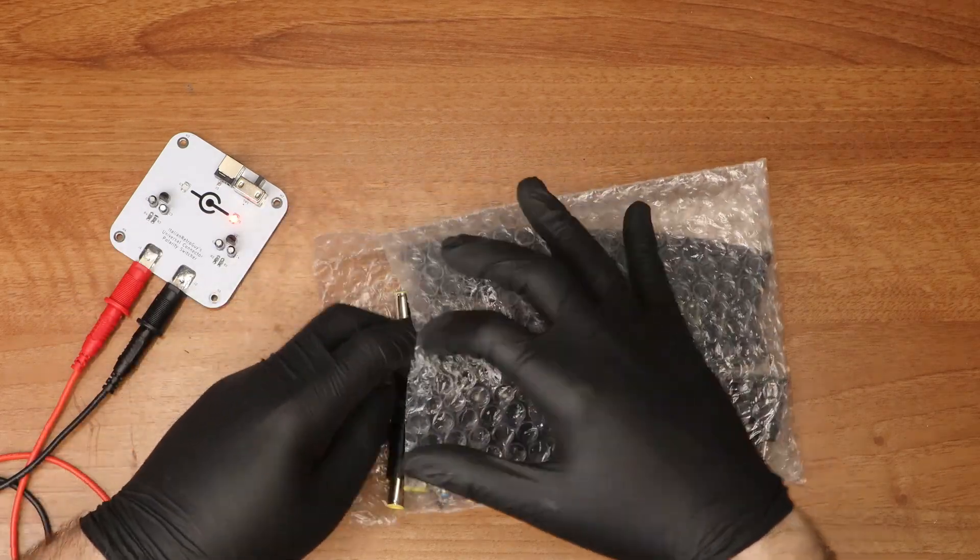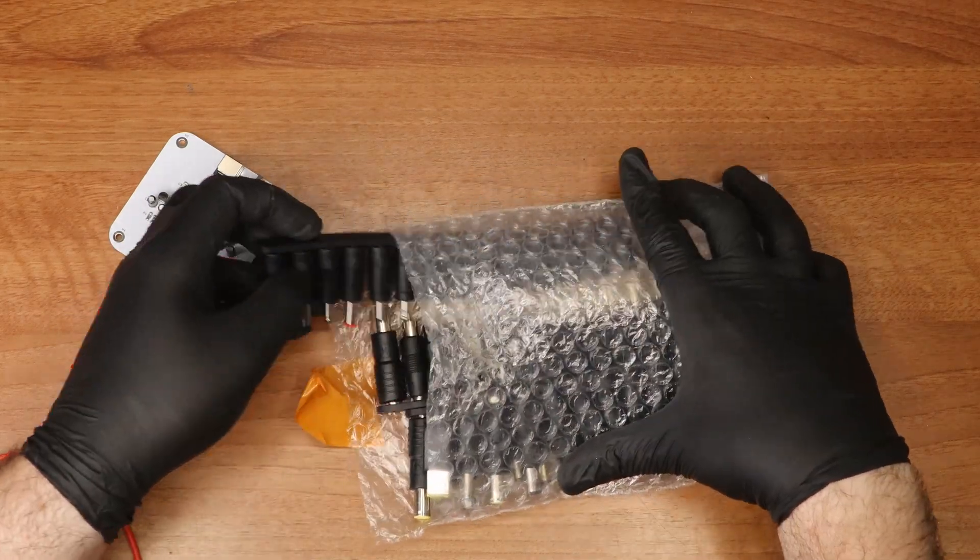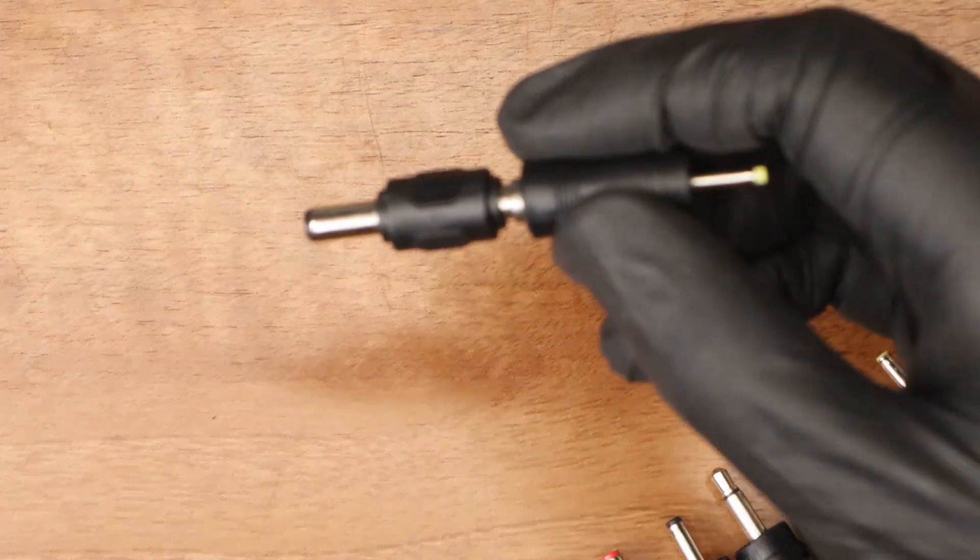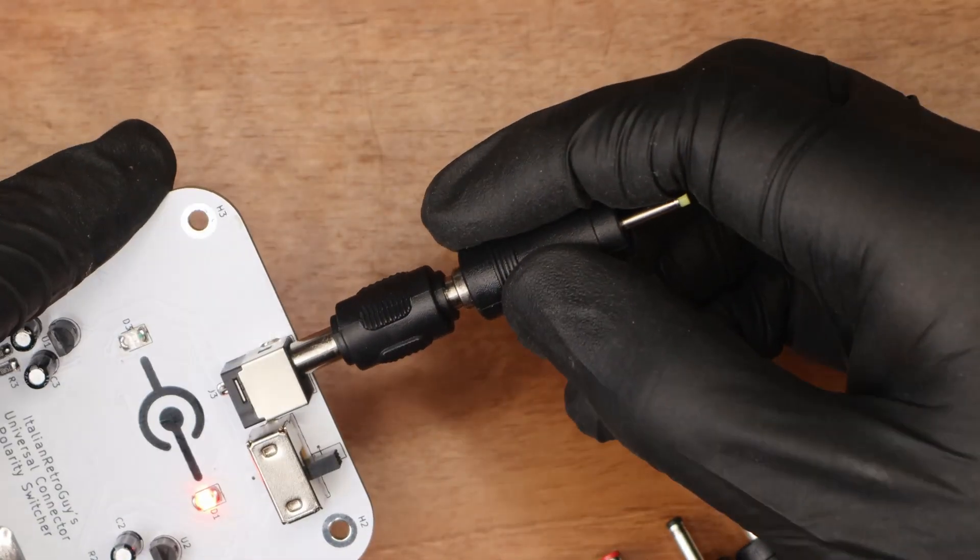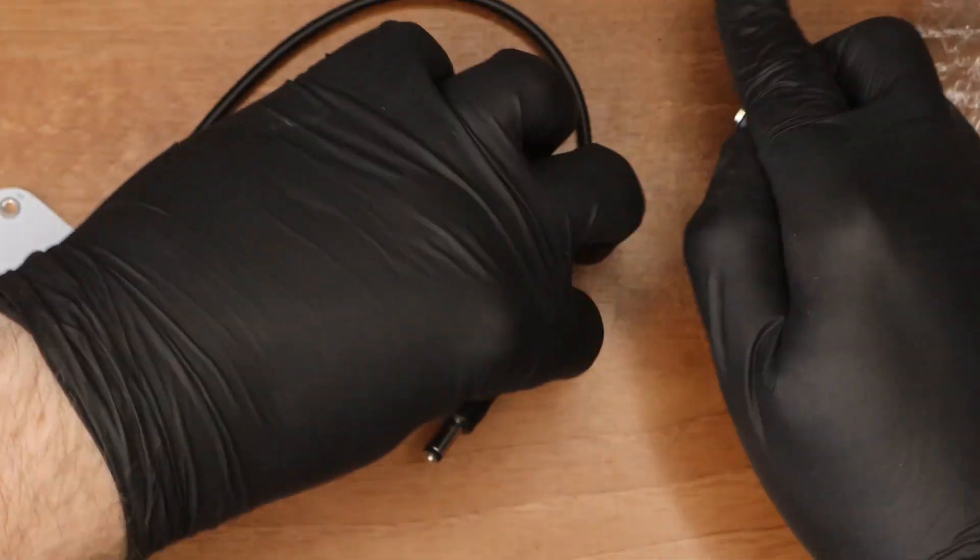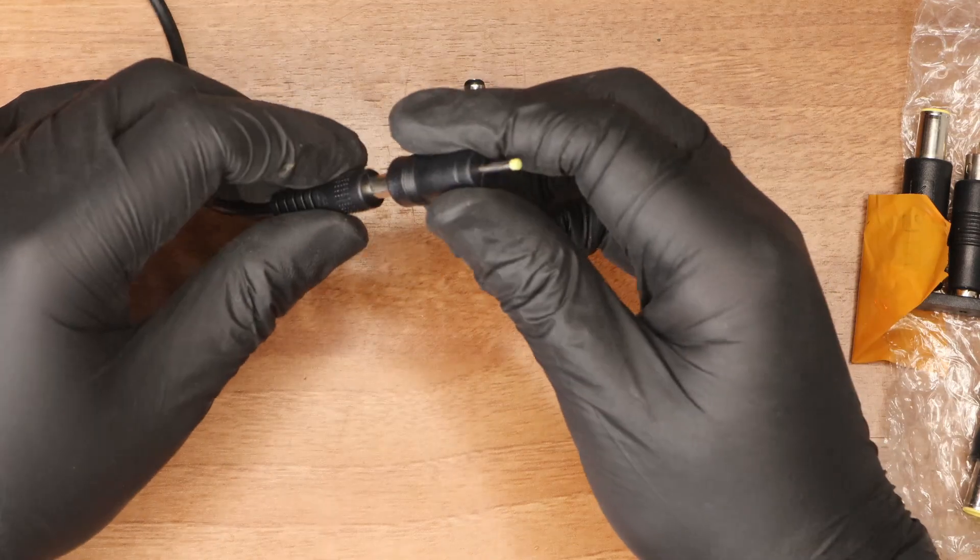Regardless of the method you choose, I highly recommend investing in a good set of universal connectors. You can find a link to the recommended set in the description below. To use it, simply plug a male-to-male adapter into the board, and then you can connect any desired connector. I particularly recommend a wired adapter to avoid any potential damage if the board gets snagged.